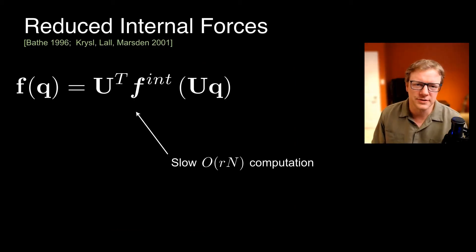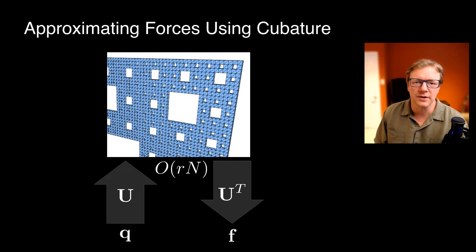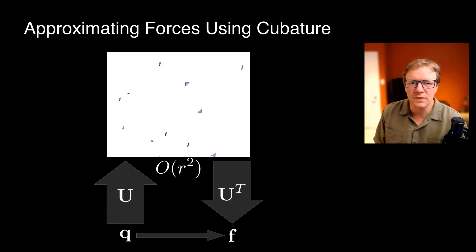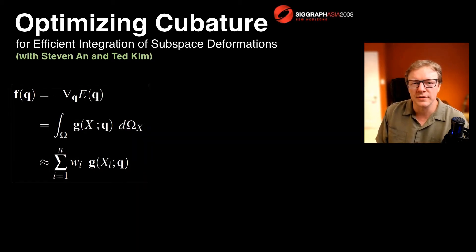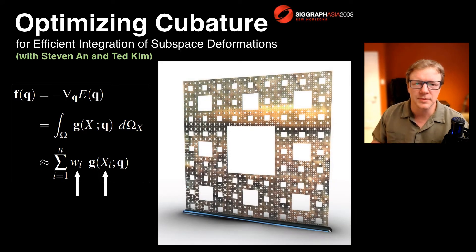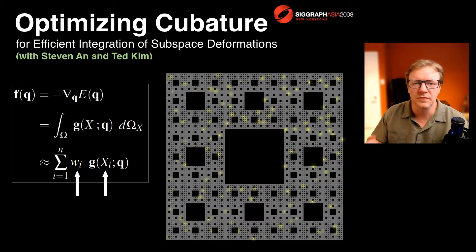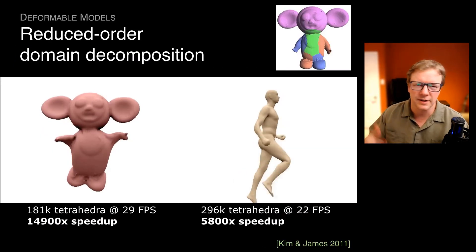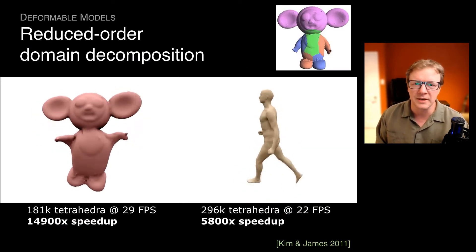In general nonlinear materials, you're stuck with evaluating the forces at all the vertices and then projecting them down into the subspace to get the reduced order forces. But we found a way to just use a sparse set of points by optimizing cubature for specific domains and specific force models. So you could just find a magic set of points and weights to do these integrals, and that gave you better performance than STVK and allowed us to scale up to higher ranks for sound synthesis and other applications like reduced order domain decomposition.